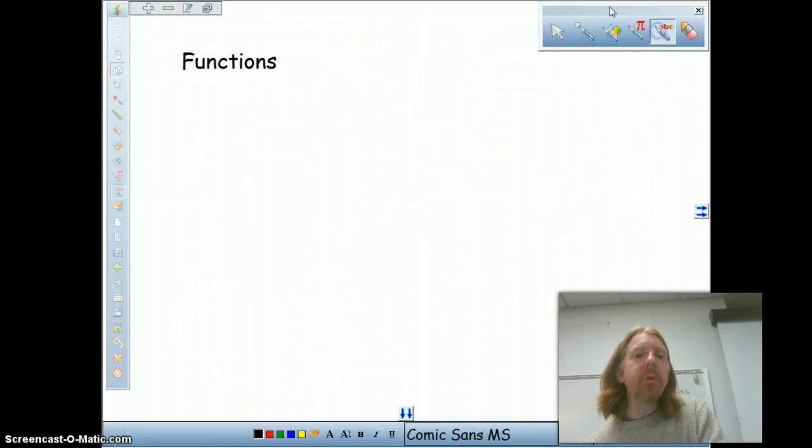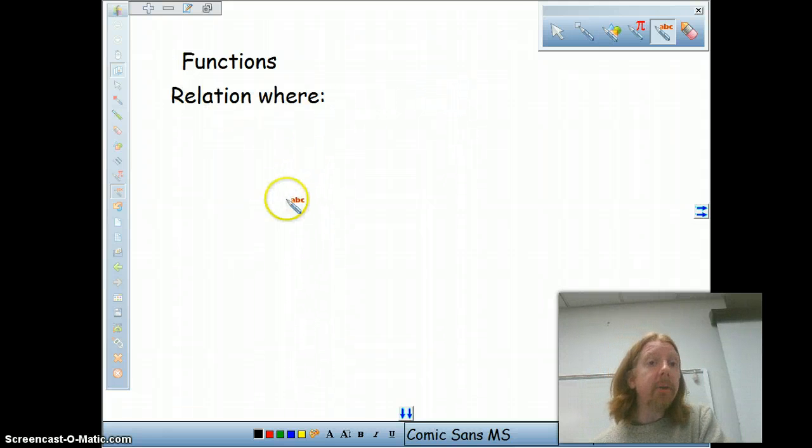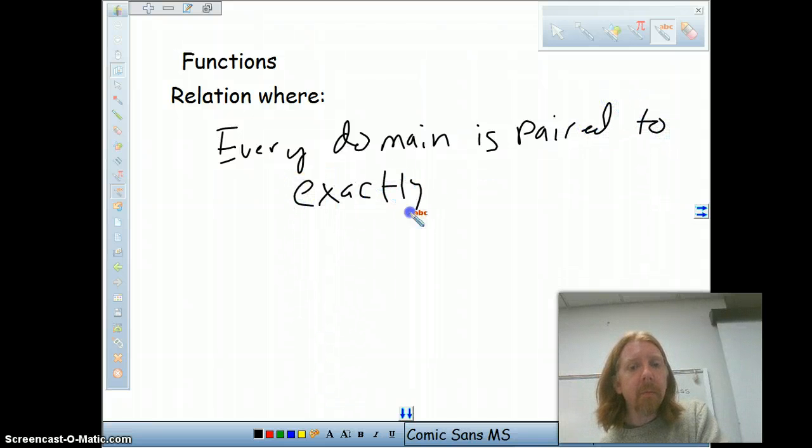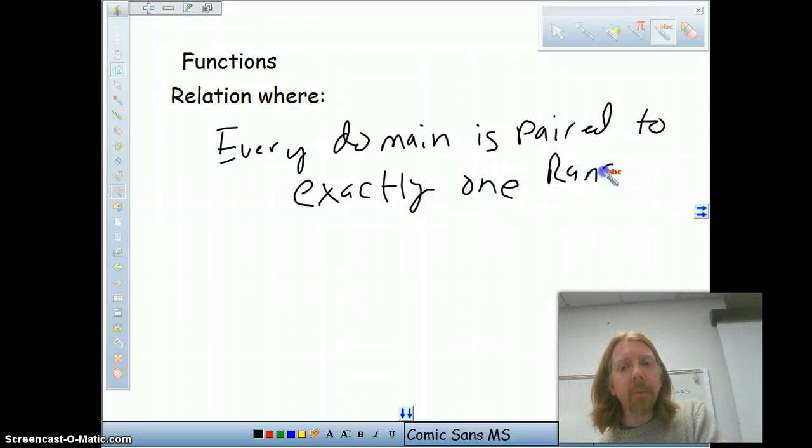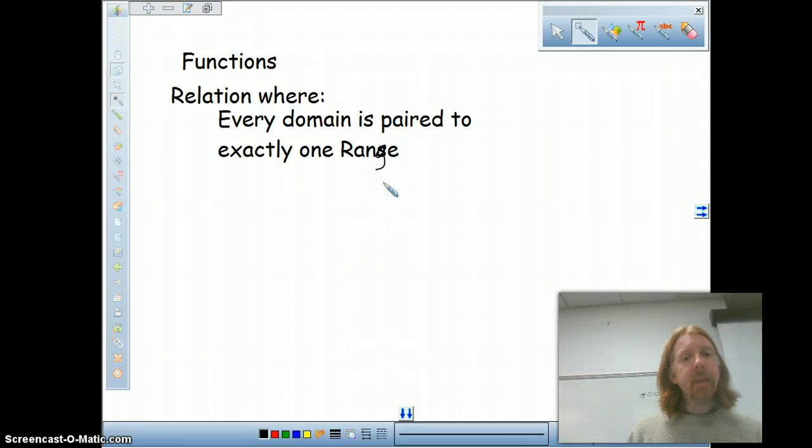So to be a function, we're talking about a relation where every domain value is paired to exactly one range value. Not two, not five, not three, but exactly one. I also want to make sure that every item in the domain does get used.